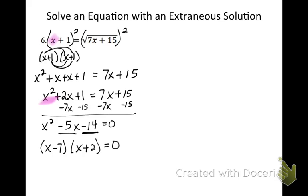And then to solve it, my last step, I'm just going to say what would make this parenthesis 0. Well, if x equals 7, that would be 0. And what would make the second parenthesis 0? That would be if x equals negative 2. And so I have two answers, but I need to check them to make sure that they work.